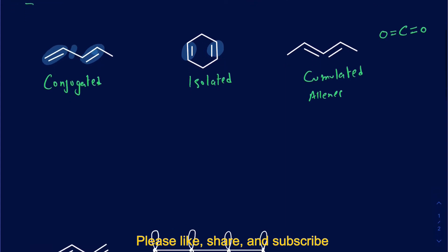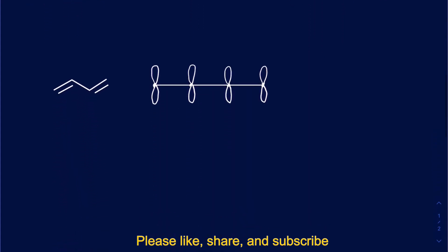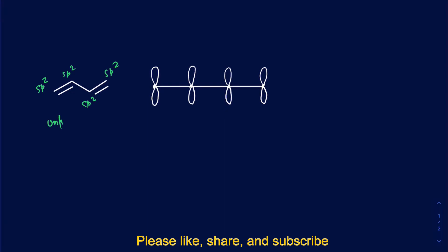Now let's talk about conjugated dienes, since they are the most stable due to stabilization energy coming from resonances. To understand why, let's discuss their molecular orbitals. In a conjugated diene — taking 1,3-butadiene as an example — every carbon is sp2 hybridized. That means there is one unhybridized p orbital on every single carbon atom. I have drawn those four carbons, each with their unhybridized p orbitals.